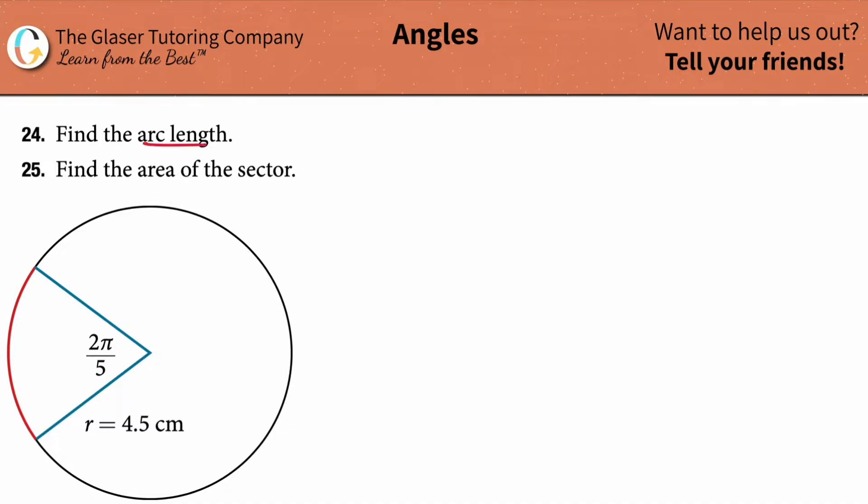So how do we figure out arc length and the area of a sector when we have some of this given information? Remember that the arc length is simply the curve, the circular curve, from two points on the circle cut out by two radii. This in red is the arc length, and we have a relationship between arc length and a couple of the other variables in a circle.